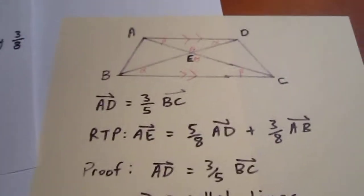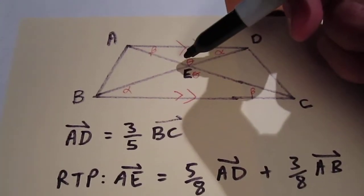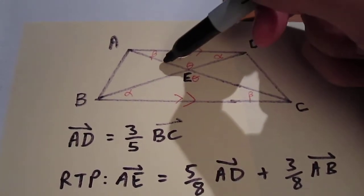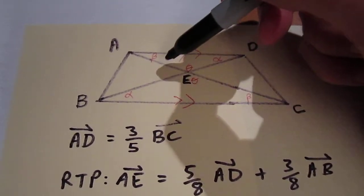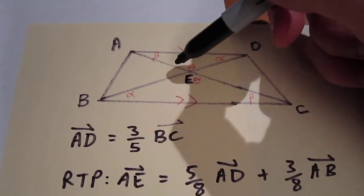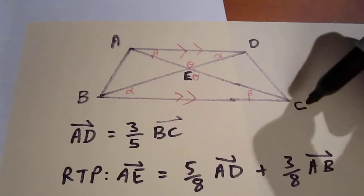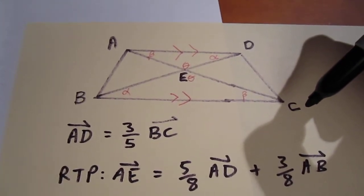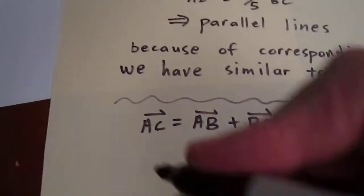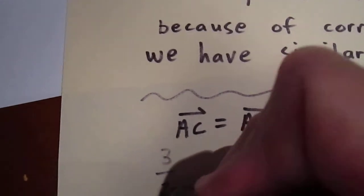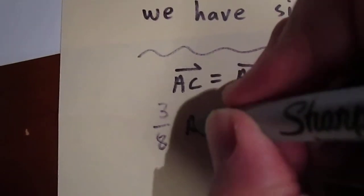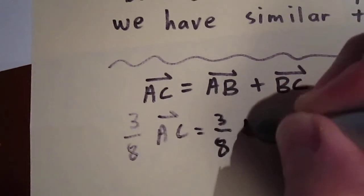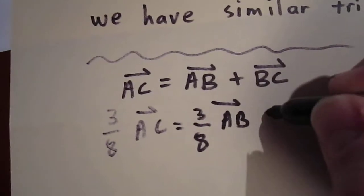Now, we know that AE is equal to 3 eighths of AC. We know that because we're in the ratio 3 to 5. So, this is 3 parts, this is 5 parts. So, altogether from A to E is 3 over 8 of the whole. So, I'm going to multiply AC by 3 eighths. 3 eighths of AC is equal to 3 eighths of AB plus 3 eighths of BC.